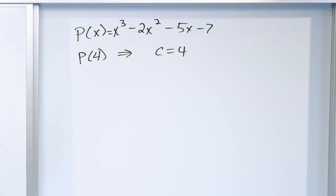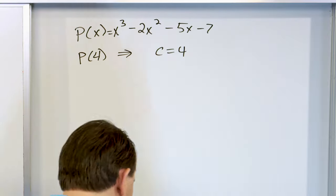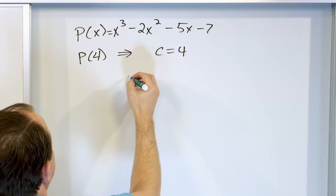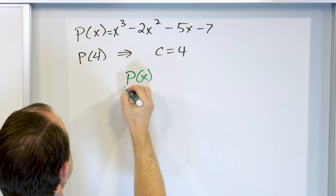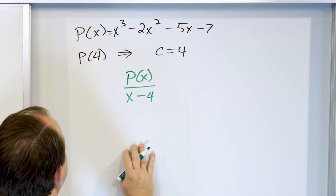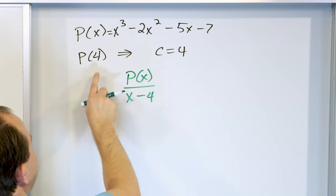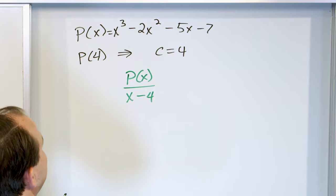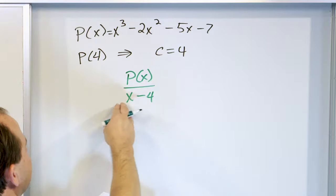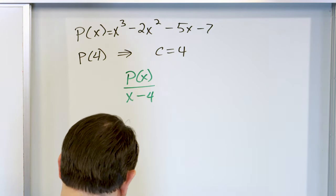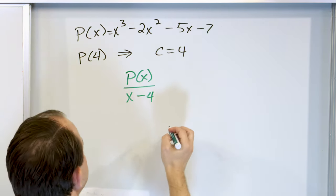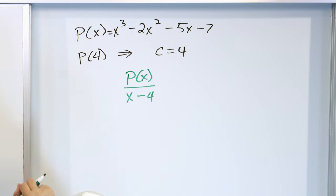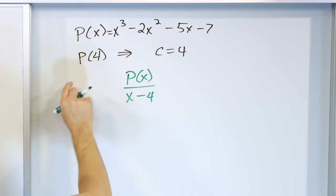The bottom line is if I'm trying to evaluate this at p of 4, all I have to do is find the remainder when I take p of x and divide it by x minus 4. I divide by x minus 4 because there's a positive 4 in there — I divide by x minus c in terms of the theorem. The remainder I get when I do that is going to be equal to p of 4.